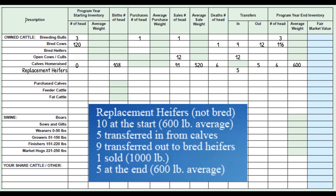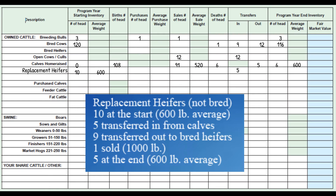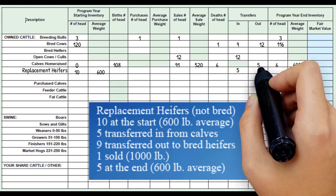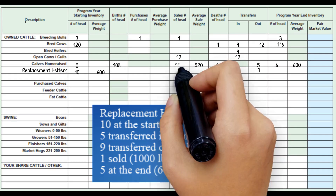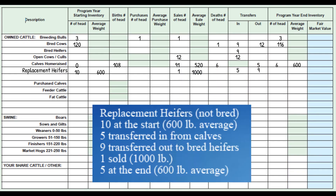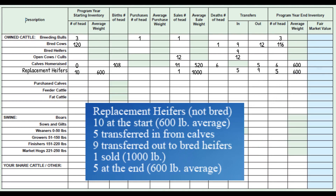Now we'll continue entering the replacement heifers not bred row. Joe had ten at the start of the year at about 600 pounds on average. We already entered the five transferred in from calves. Now we enter the nine transferred out to bred heifers. One was sold during the year at 1,000 pounds. This leaves five replacement heifers at the end of the year averaging about 600 pounds. That is it for the replacement heifer row.